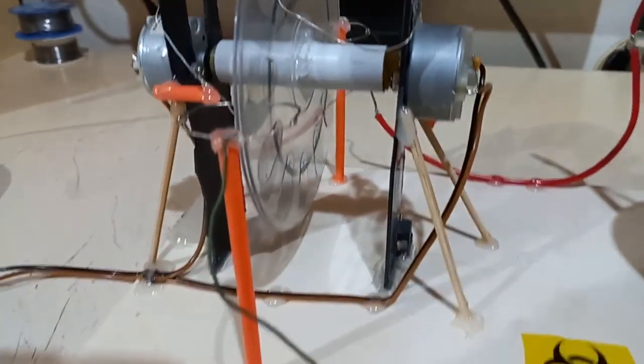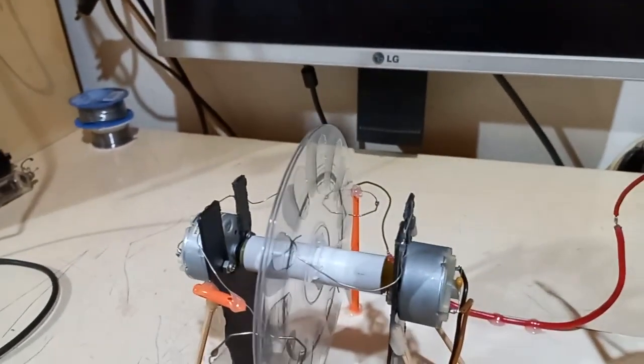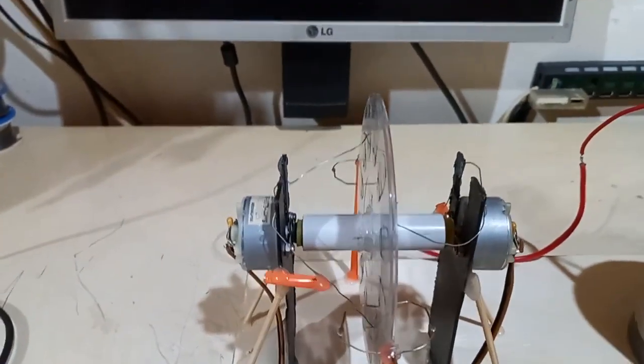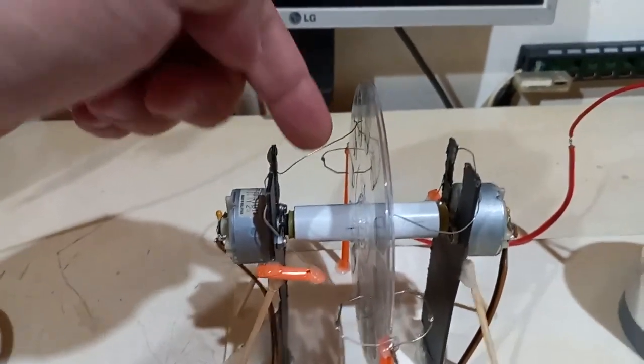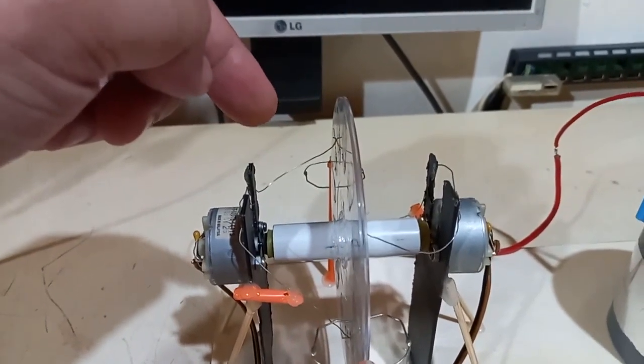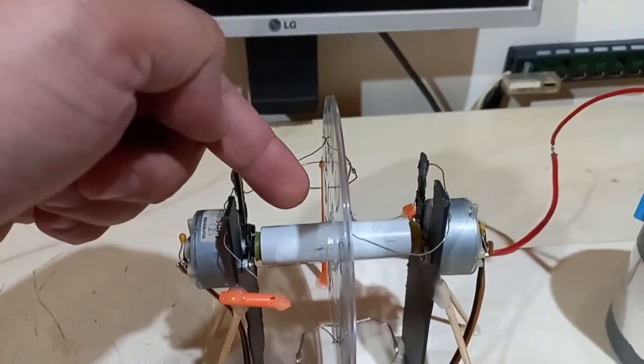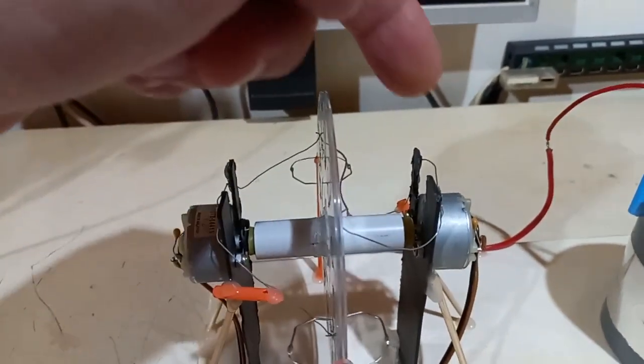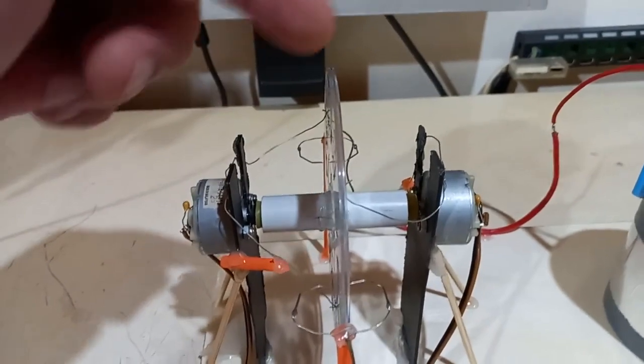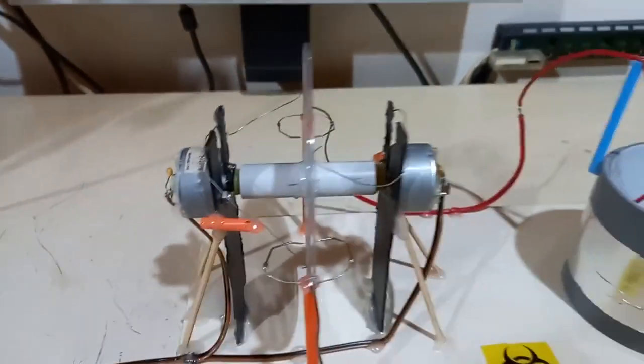Anyways, the structure is quite simple, as you can perfectly see. And the only complex part to make has been this PVC pipe here, 16mm pipe, that has a hard drive ball bearing in the middle here, to let the two halves spin the one on the other and to be centered as much as possible.